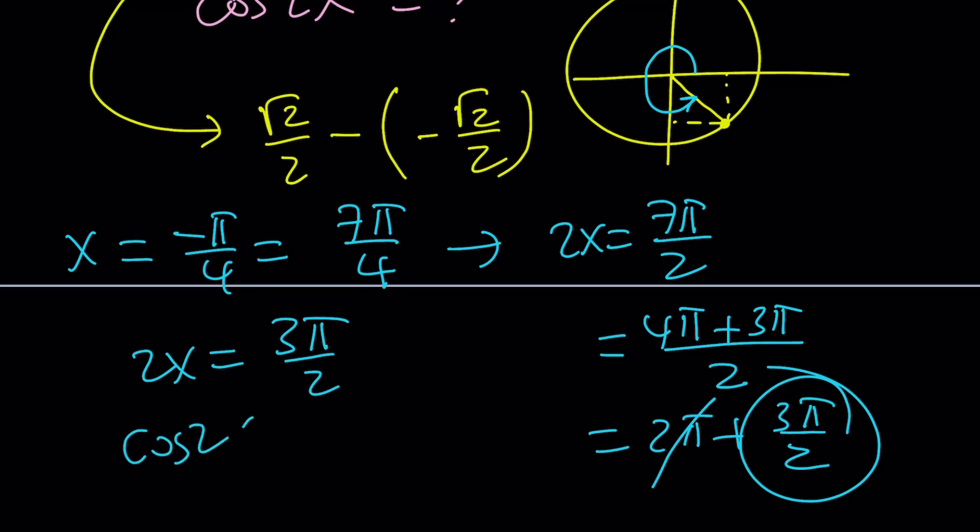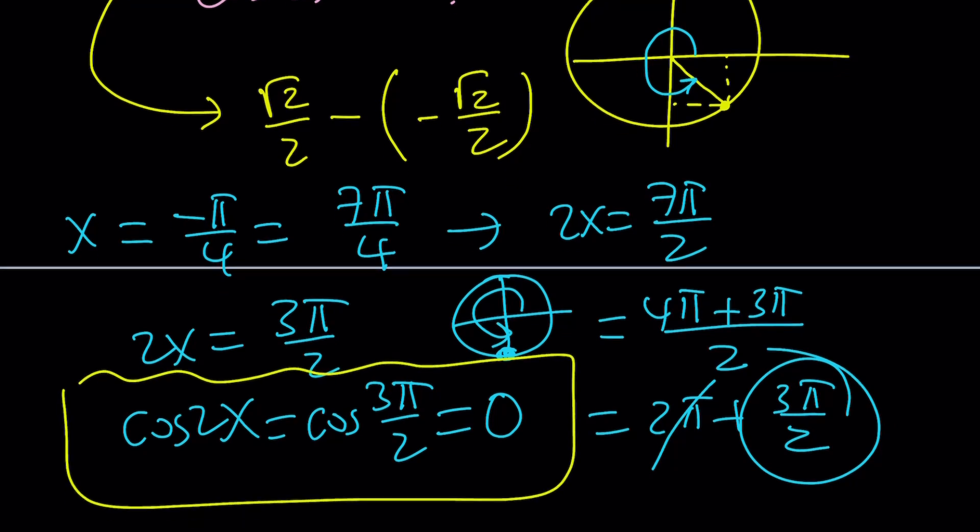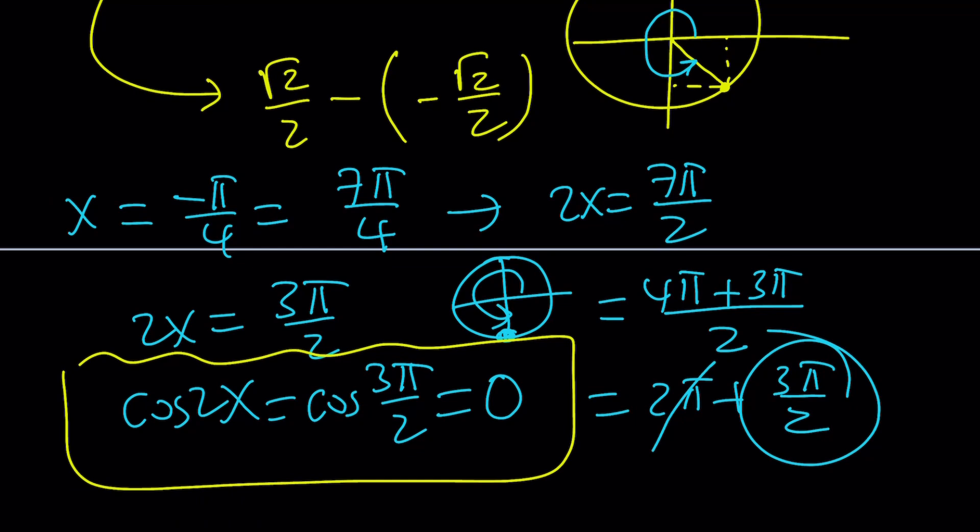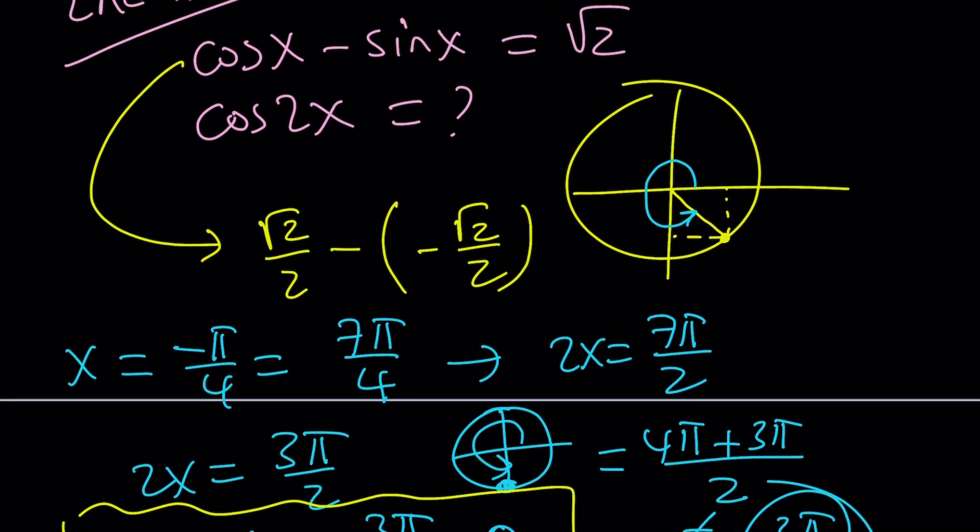2x is 3 pi over 2. And cosine of 2x is going to be cosine of 3 pi over 2. And if you think about the unit circle again, this is 270 degrees and its cosine is 0 because it's on the y axis. So, that would be the answer. The answer is 0 and there's only one way to do it. Obviously, there's other ways to solve this problem.